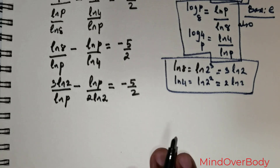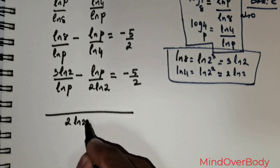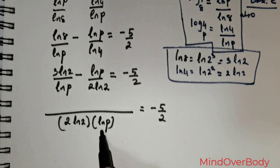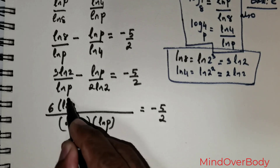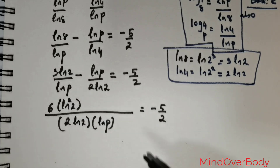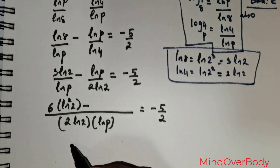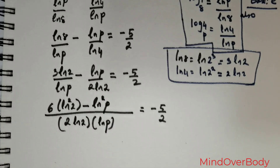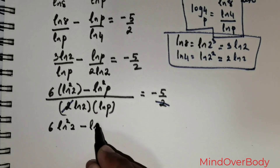Taking the LCM of ln(p) and 2·ln(2), which gives 2·ln(2)·ln(p), and simplifying: the ln(p) terms cancel, giving 2×3 = 6, so we get 6·ln²(2). The 2·ln(2) terms cancel leaving ln²(p). So the equation becomes: 6·ln²(2) minus ln²(p), over 2·ln(2)·ln(p), equals negative 5 over 2. The 2s cancel, giving 6·ln²(2) minus ln²(p) equals negative 5·ln(p)·ln(2).